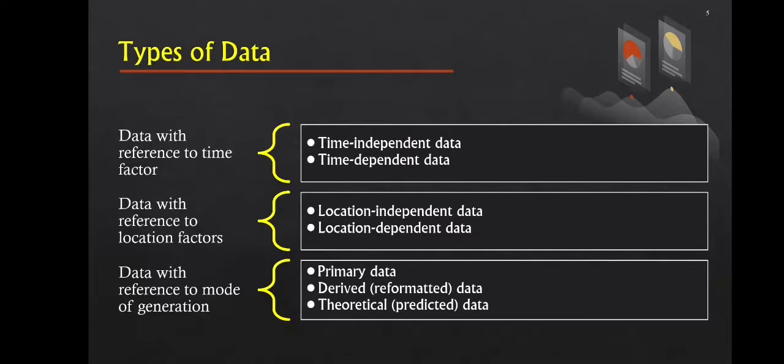There are six types of data: data with reference to time factor, data with reference to mode of generation, data with reference to location factors, data with reference to nature of quantitative values, data with reference to terms of expression, and data with reference to mode of presentation. Each type of data has different categories.